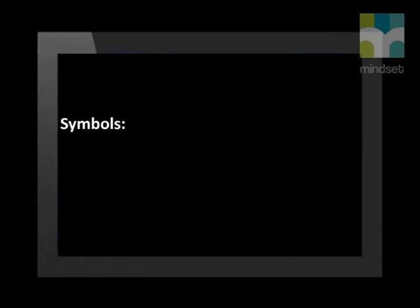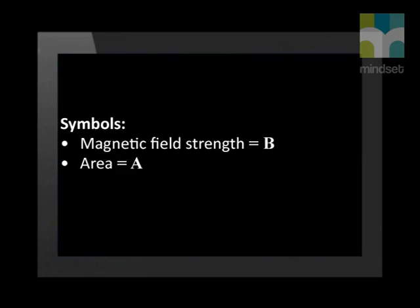We can write this in symbol form. The symbol for magnetic field strength is B and area is A. Magnetic flux is represented by the Greek letter Phi.